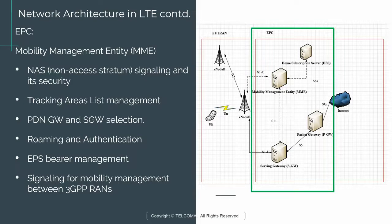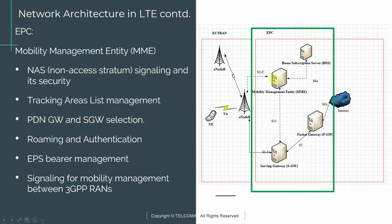To understand tracking areas: you can have multiple EUTRANs within your network, and a given EUTRAN is identified by a tracking area code specific to that EUTRAN. It is the responsibility of the MME to keep track of all the tracking area codes within a given network — that's why we say it manages the tracking area list.